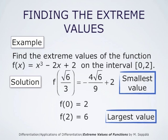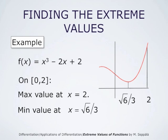The function f(x) = x cubed minus 2x plus 2 has the graph shown on the right. On the interval from 0 to 2, it attains its maximum value at the endpoint x = 2 and its minimum value at the point square root of 6 over 3.